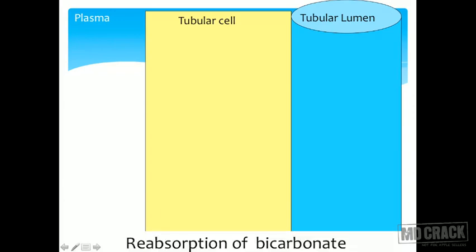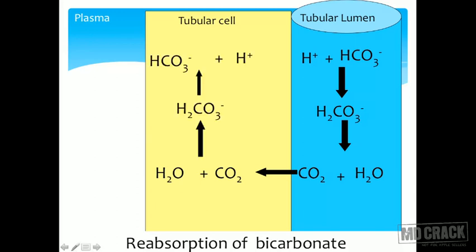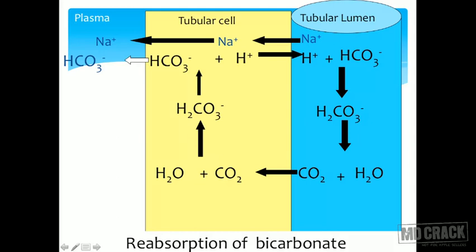Now let us look at what is happening within the kidneys. This is the tubular cell, this is the tubular lumen, and this is the plasma. The first thing we need to do is reabsorb bicarbonate. Bicarbonate that has reached the tubular lumen combines with protons to form carbonic acid; carbonic acid dissociates into CO2 plus water; CO2 comes into the tubular cell and combines with water to form carbonic acid again, which dissociates; the proton is recirculated and bicarbonate enters into the plasma.